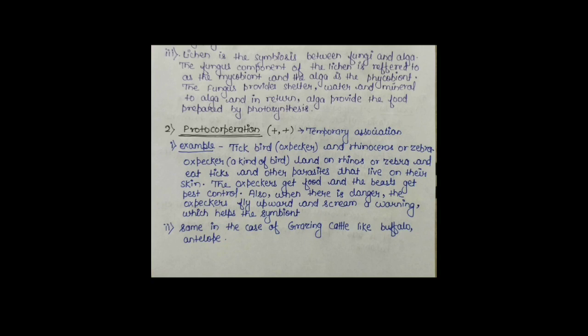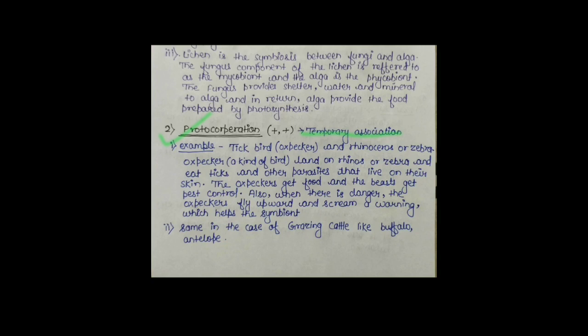अब हम लोग next example देखते हैं Proto-cooperation का। What is Proto-cooperation? It is a temporary association in which both the species are benefited — ये एक Temporary Association है जिसमें दोनों ही Species को फायदा होता है। और ये जो Association है, ये Survival के लिए ज़रूरी नहीं है — ये association हो या ना हो, किसी भी Species को फर्क नहीं पड़ेगा। But इस association से दोनों ही Species को फायदा होता है — तो that association is called Proto-cooperation।